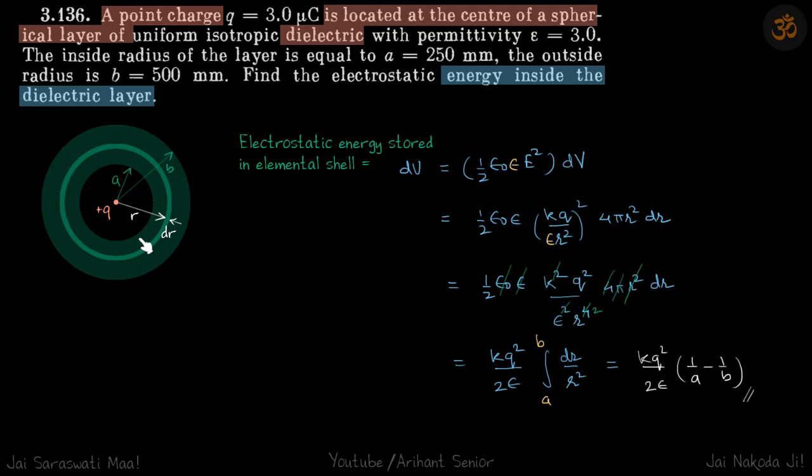Electrostatic energy stored in elemental shell dU is half epsilon E squared times volume. Here it's a dielectric, so we're going to include epsilon also here. dV, which is 4 pi r squared dr, and E is going to be kq by epsilon r squared.